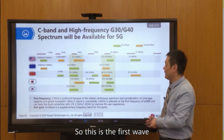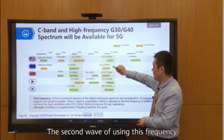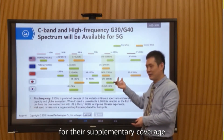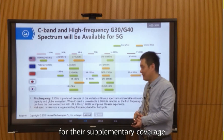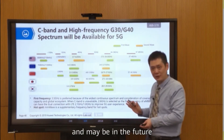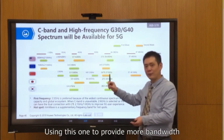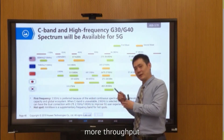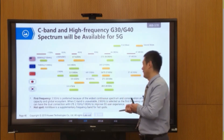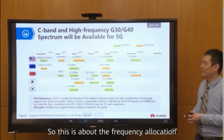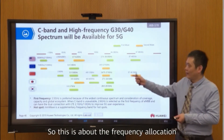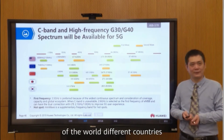The 3.5 GHz C-band will be the first wave. The second wave will use millimeter wave frequencies for complementary and supplementary coverage, though that won't happen this year — we leave it for the future. Millimeter wave will provide more bandwidth and more throughput, but coverage is not good, so it's only suitable for hotspots. This is about the frequency allocation across different regions of the world.